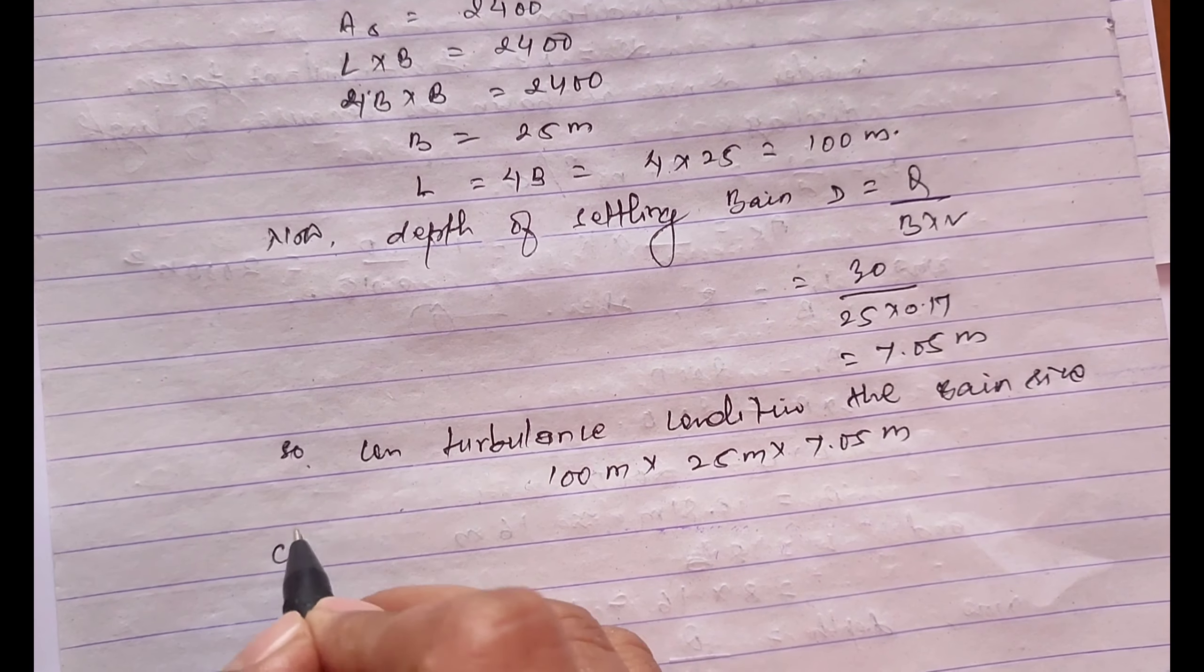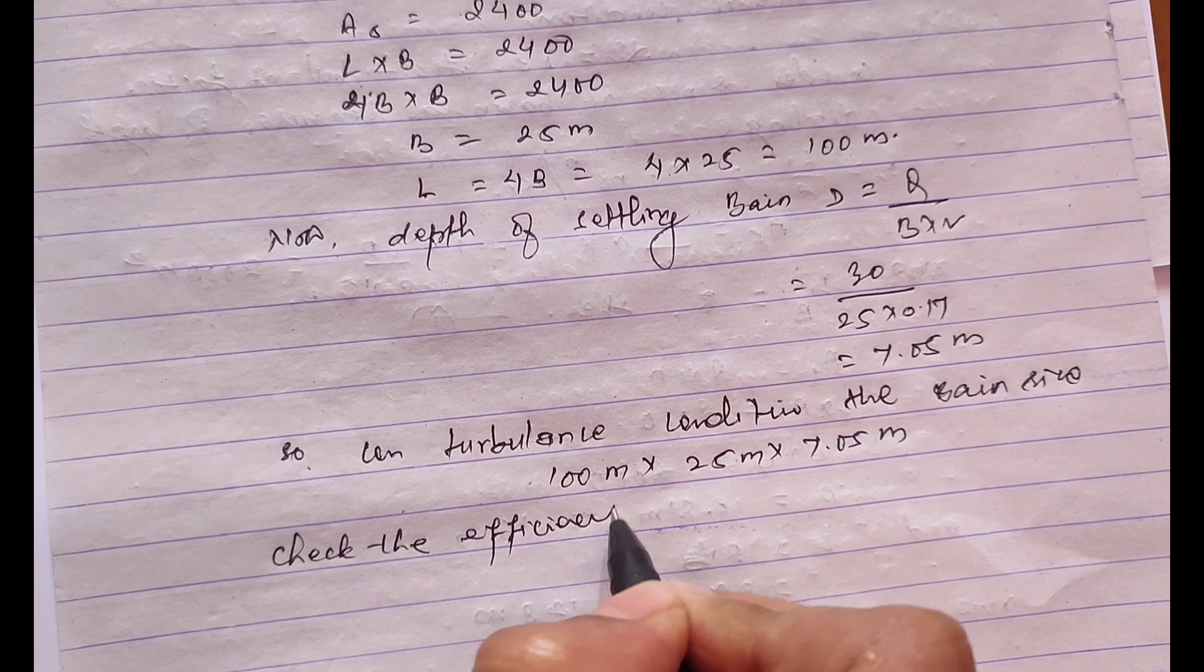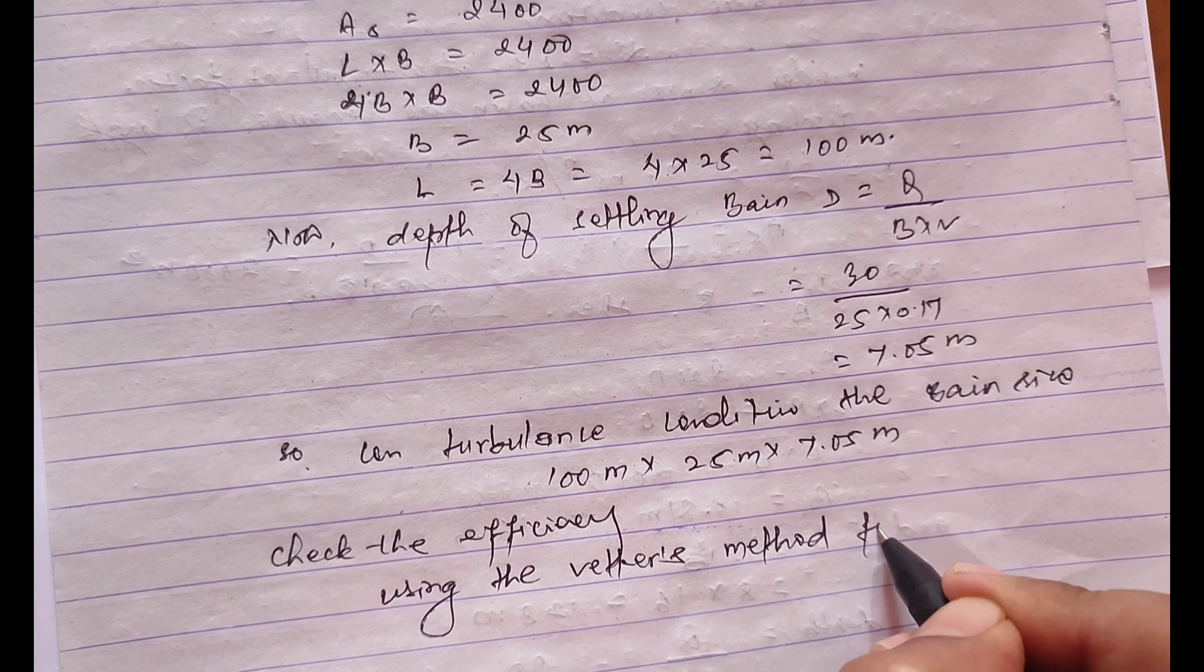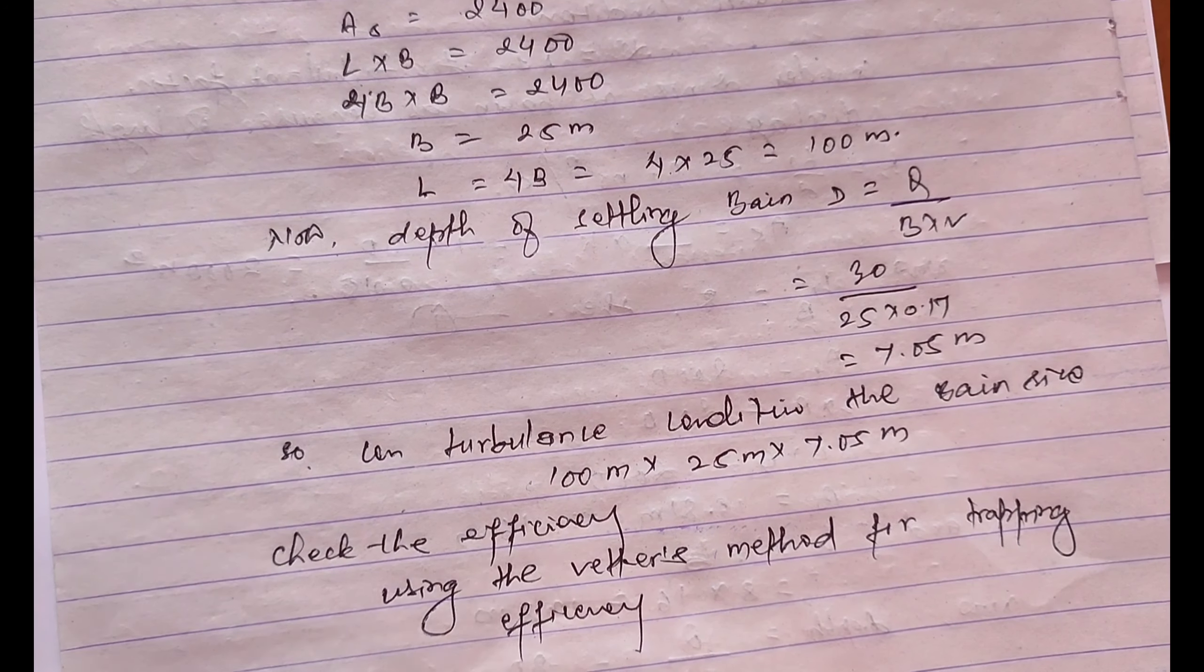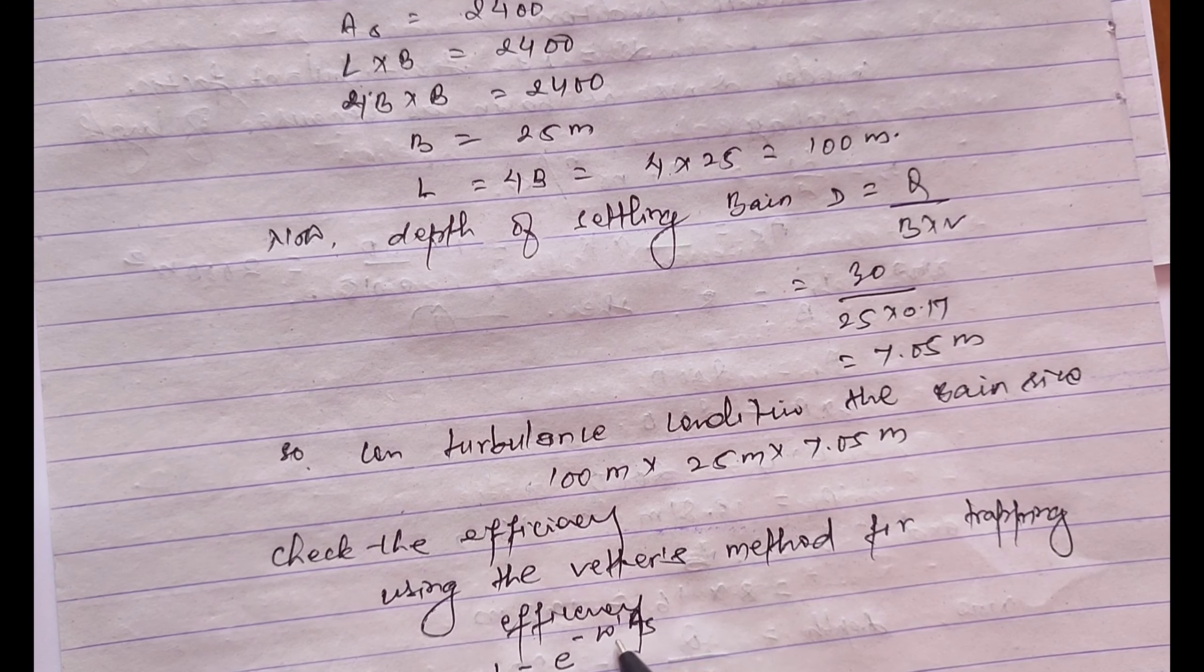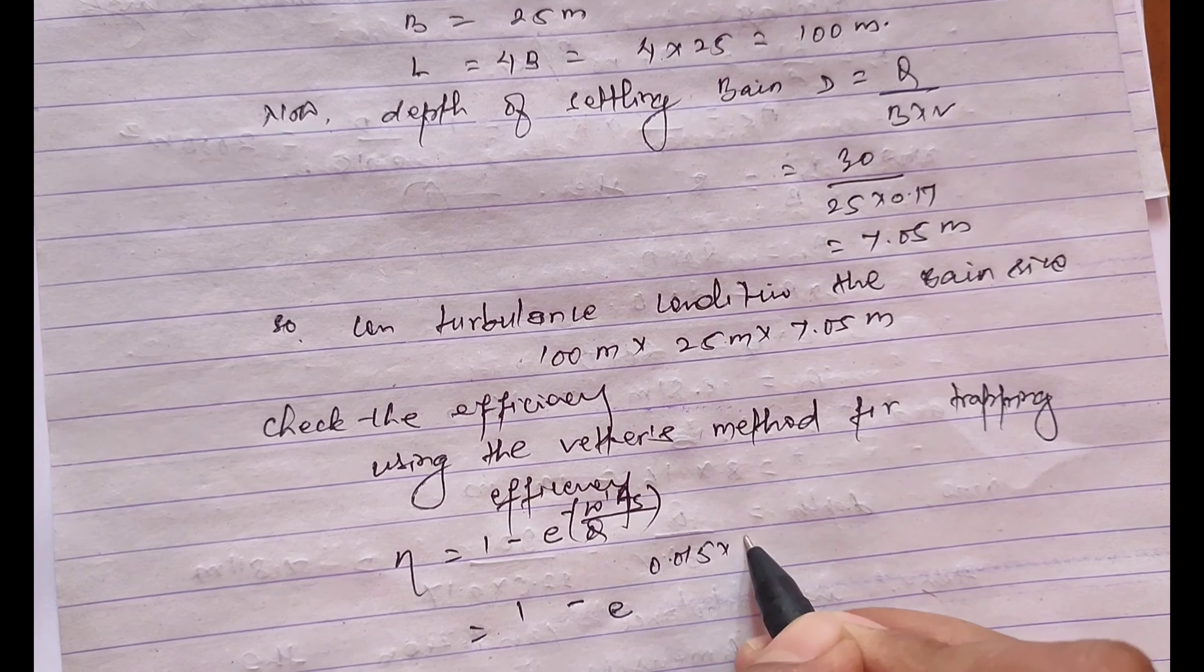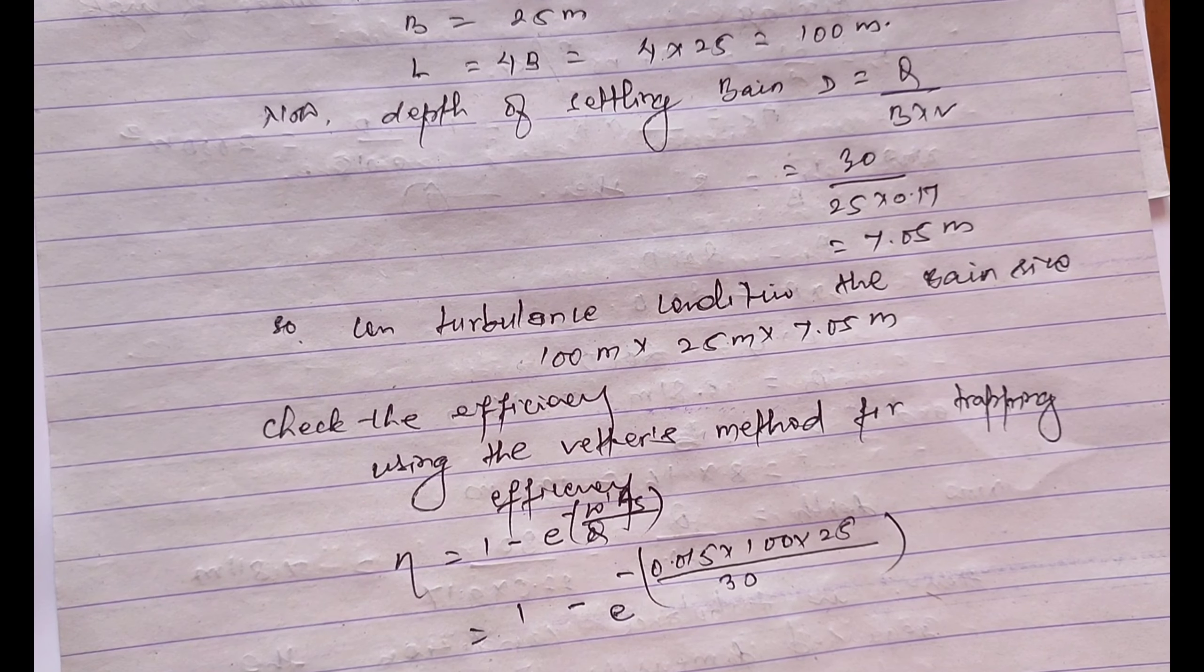At the final stage we'll check the efficiency using the Batter's method for trapping efficiency. Efficiency equals 1 minus e power minus As divided by Q equals 1 minus e power 0.015 times 100 times 25 divided by 30. On solving this the efficiency equals 71.34 percent.